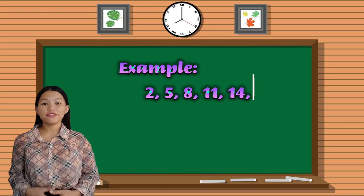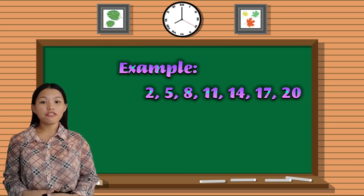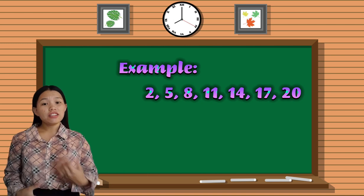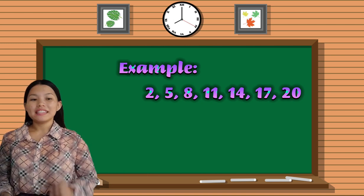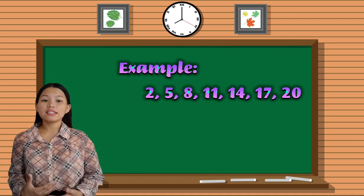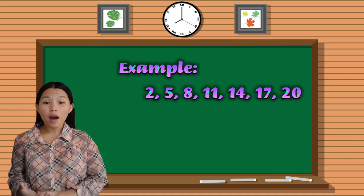2, 5, 8, 11, 14, 17, 20. Can you see a pattern in the example? Yes, it has a pattern. The arithmetic sequence, as you can notice, has a common difference.